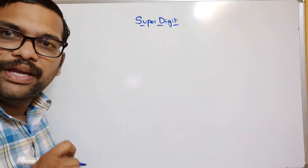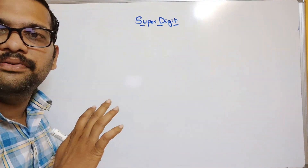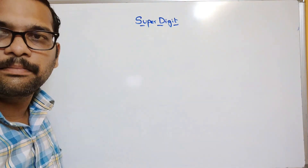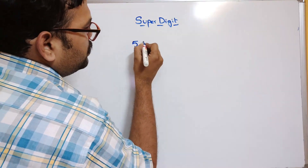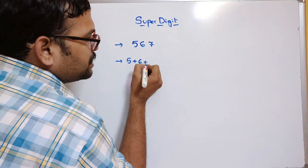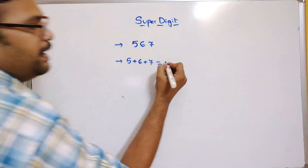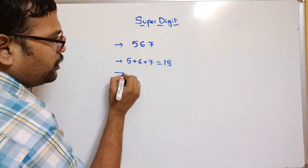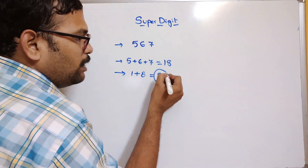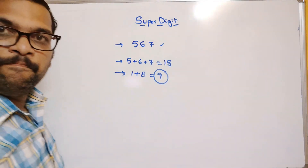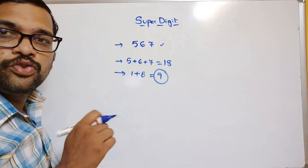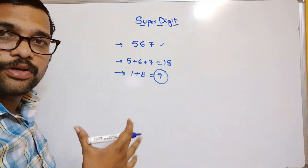A super digit of a given number is the sum of all its individual digits, and we have to repeat that until the sum becomes a single digit number. For example, if the number is 567, then 5 plus 6 plus 7 equals 18, which is a two-digit number. So we perform 1 plus 8 equals 9, which is a single digit — this is the super digit.